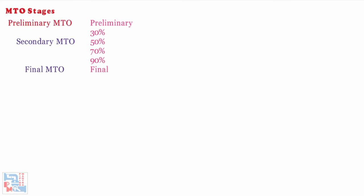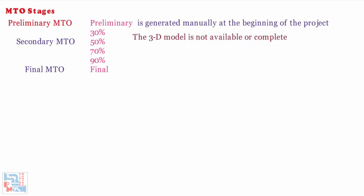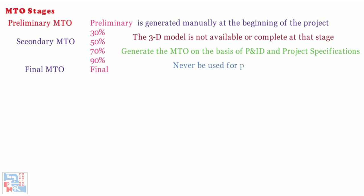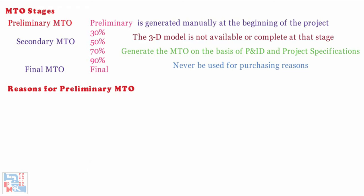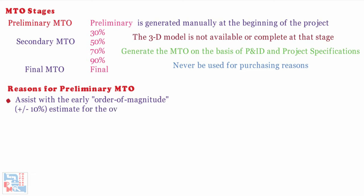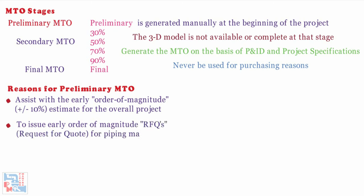The preliminary MTO is generated manually at the beginning of the project. There is usually limited information to work with, and very often the 3D model is not available or complete at that stage. Hence, we generate the MTO on the basis of P&ID and project specifications. This would never be used for purchasing. There are two reasons a preliminary piping MTO is usually done: first, to assist with the early order of magnitude (±10%) estimate for the overall project; second, to issue early order of magnitude RFQs (request for quotation) for piping materials.